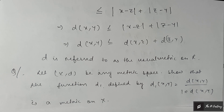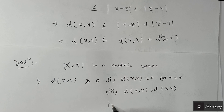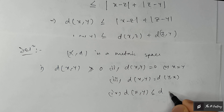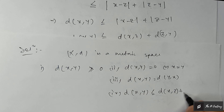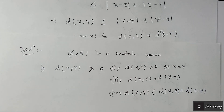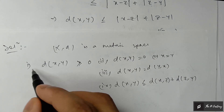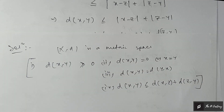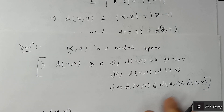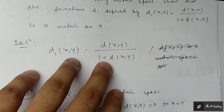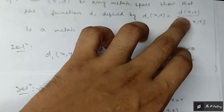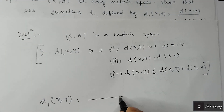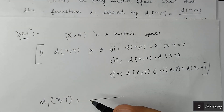Since (X, d) is a metric space, it satisfies: symmetry d(x, y) = d(y, x), and the triangular inequality d(x, y) ≤ d(x, z) + d(z, y). Now from the question, d₁(x, y) = d(x, y) / (1 + d(x, y)). We have to prove that d₁ is a metric on X.